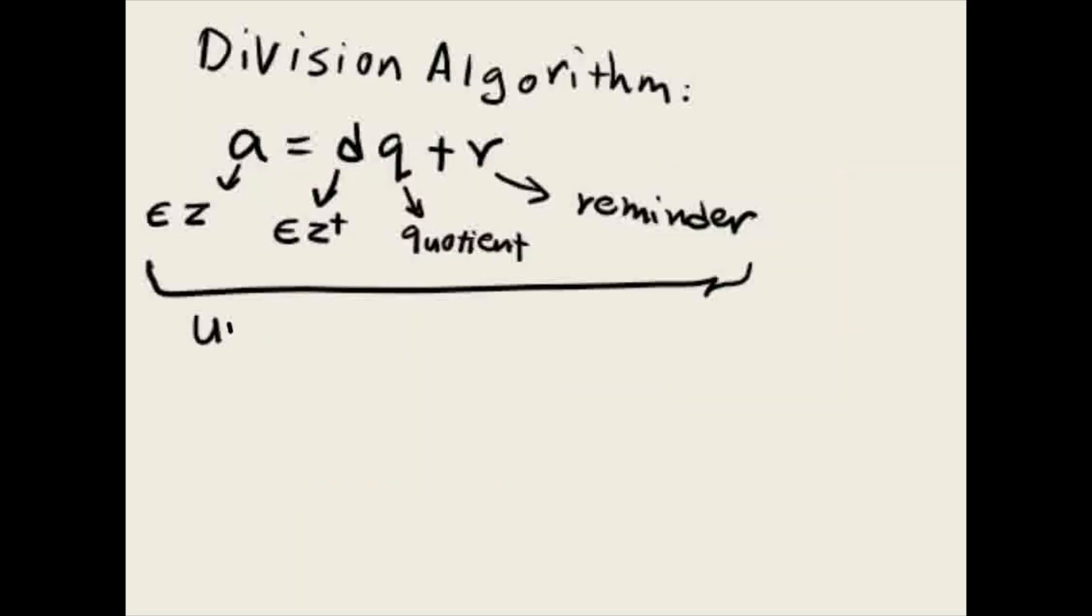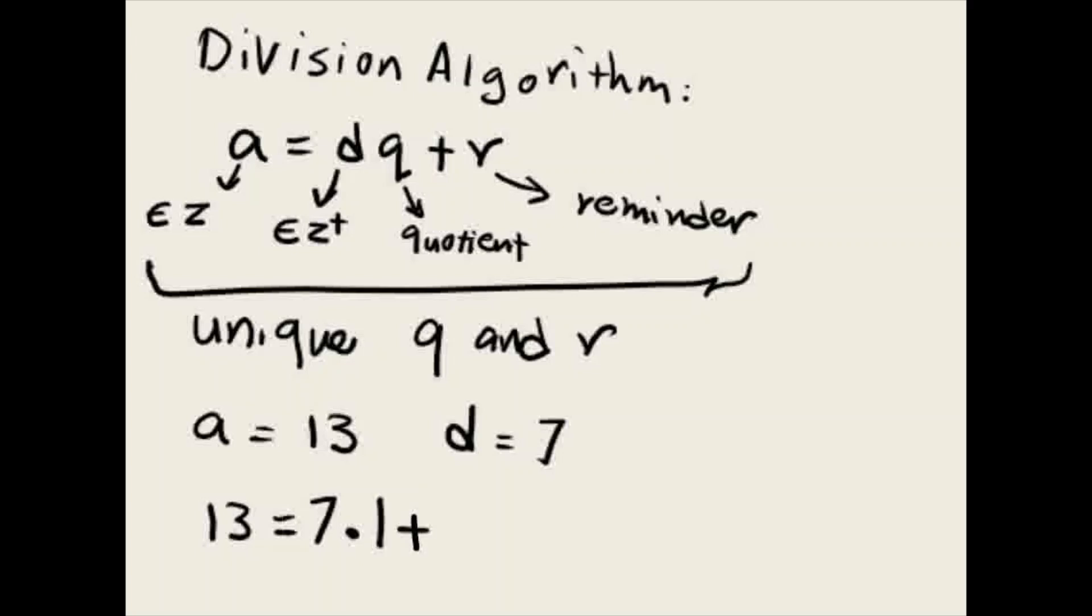For this we have a unique Q and R. We can say A equals, for example, 13, and our D equals 7. So now if we want to write this with this formula, we're going to have 13 equals 7 times—the number that multiplies by 7 to get 13 is only 1—plus 6 remainder.